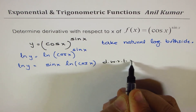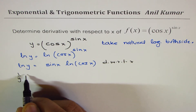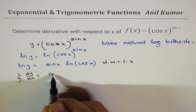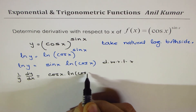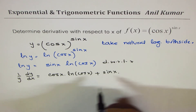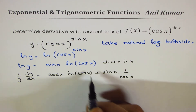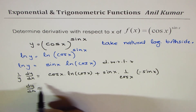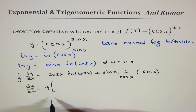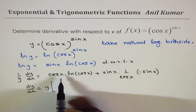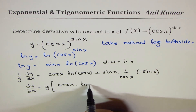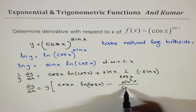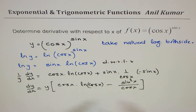Differentiating both sides with respect to x: (1/y)(dy/dx) equals, by the product rule, cos(x) · ln(cos(x)) plus sin(x) times (1/cos(x)) times (−sin(x)). So dy/dx equals y times (cos(x) · ln(cos(x)) minus sin²(x)/cos(x)). Since the question doesn't ask us to simplify further, we can leave the answer in this form.